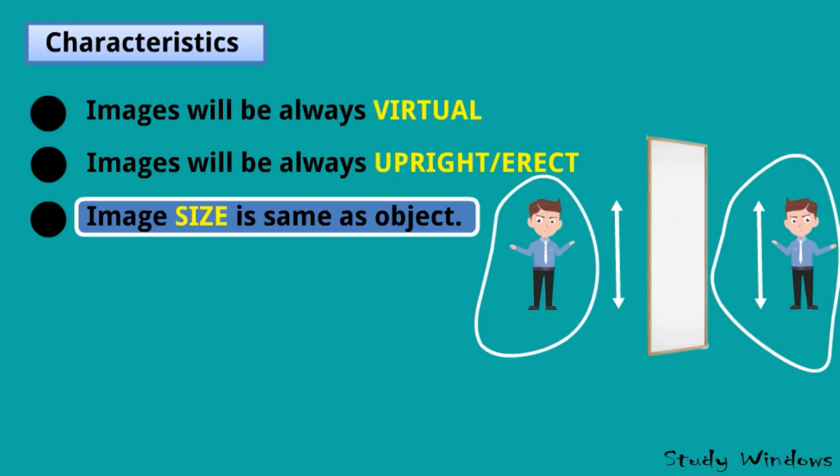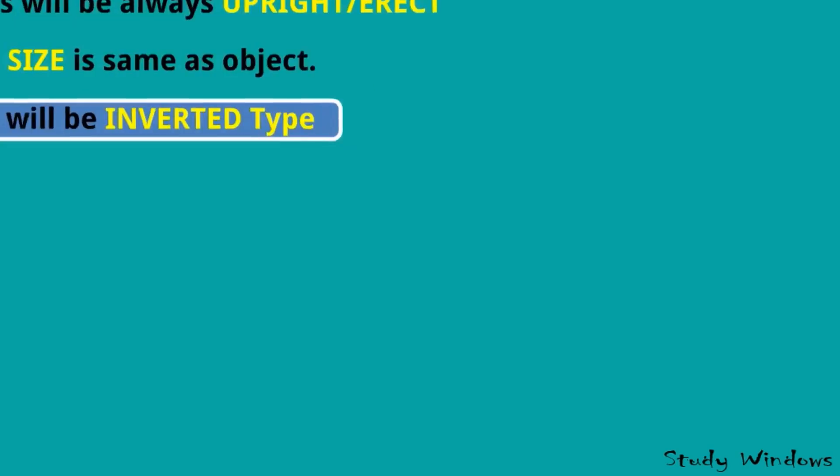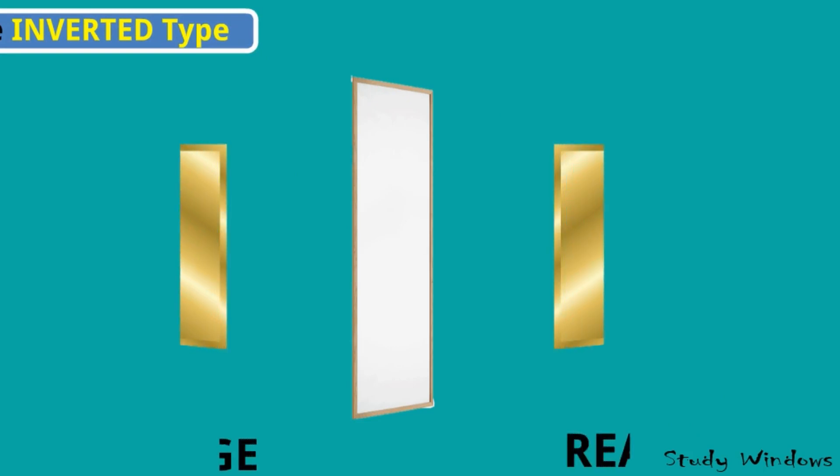Image will be inverted type. Now inverted type means suppose, look at this example - if you are writing F, see this real F, and the image will be like this.